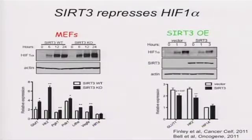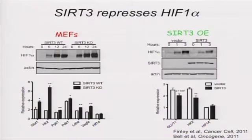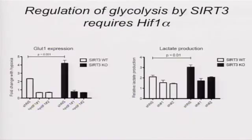Moreover, in SIRT3 overexpressing cells — shown here are 293T cells — SIRT3 overexpression destabilizes HIF and downregulates expression of HIF target genes.